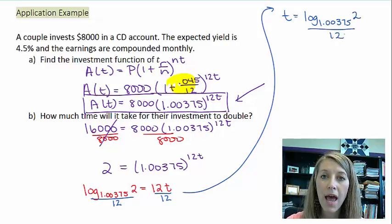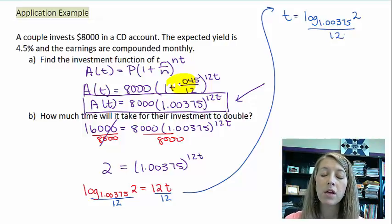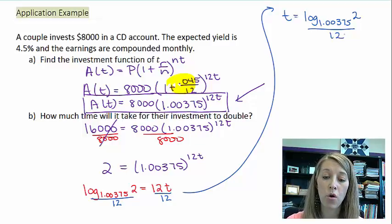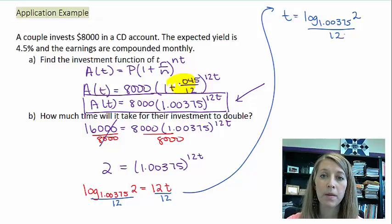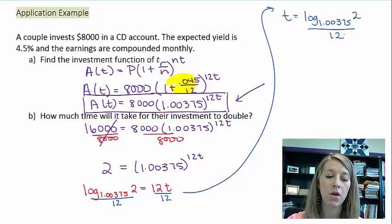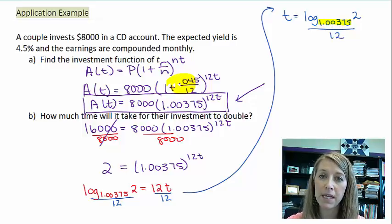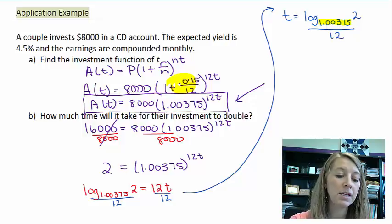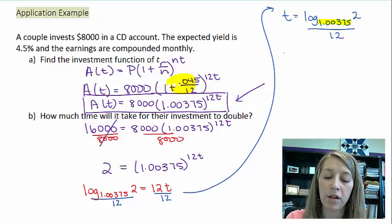We want an actual time amount here. How many years is it going to take to double? Even though this is a precise, exact answer, that doesn't actually answer our overall question. We're going to need an estimated answer, so we need to type this in our calculator. Unfortunately, the calculator does not know how to interpret it when our base is different than base 10 or base e. That means I need to do the change of base formula.